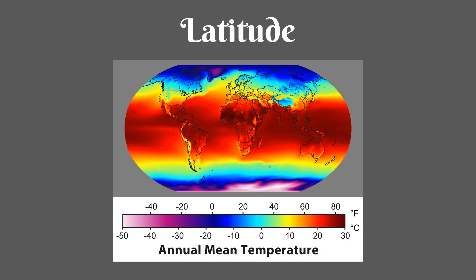Latitude is the degrees north or south of the equator. The highest temperatures are near the equator. The further you go away from the equator, the lower the temperature of the environment.